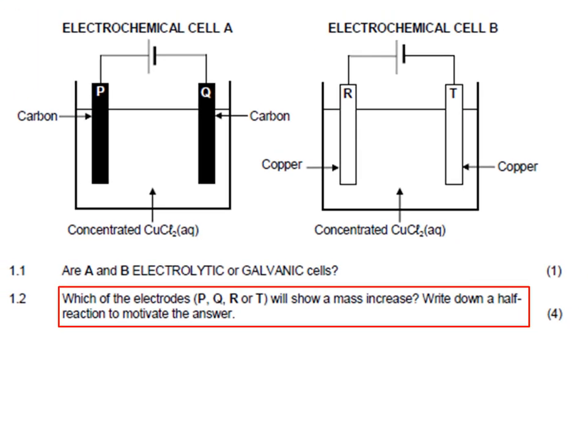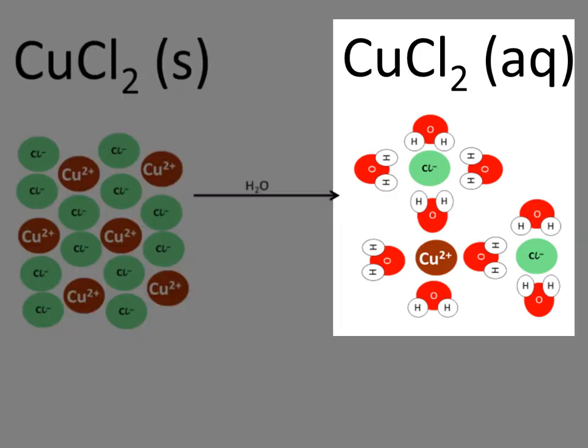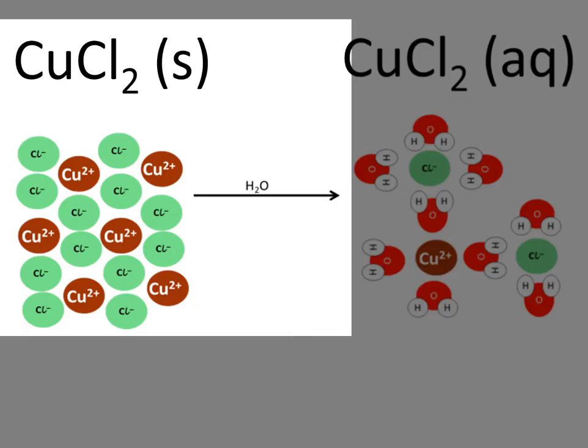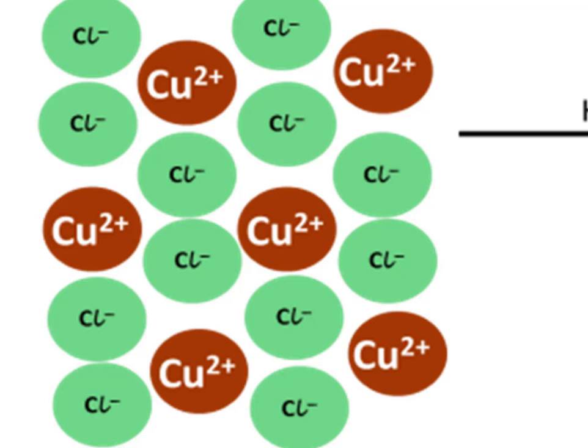Now we are asked which electrode will increase in mass. The electrolyte is copper chloride solution. Solid copper chloride is a giant ionic molecule consisting of positively charged copper ions, Cu2+, and negatively charged chloride ions, Cl-, held by ionic bonds in a crystal lattice.